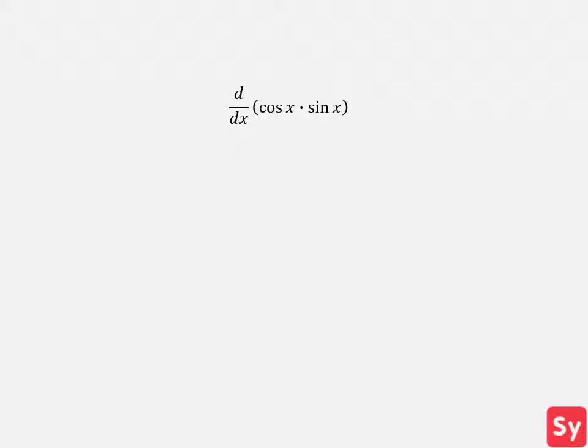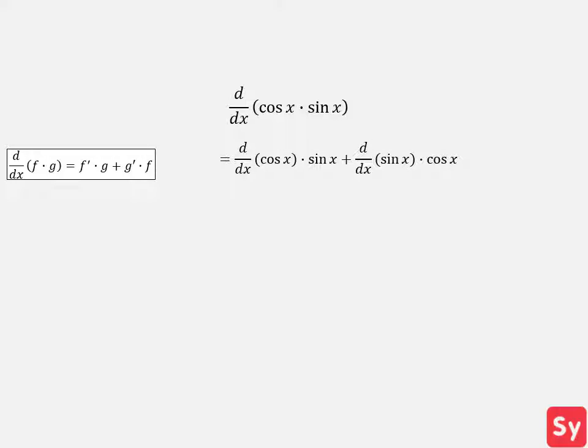Next example, we want to compute the derivative of cosine of x times sine of x. Since we are taking the derivative of two functions multiplied together, we can use the product rule. This gives us the derivative of cosine of x times sine of x plus the derivative of sine of x times cosine of x.